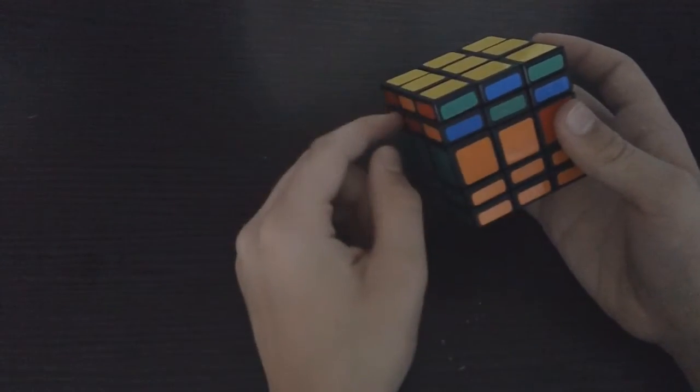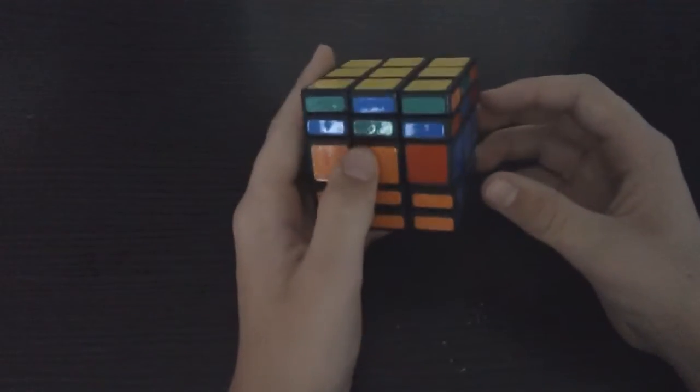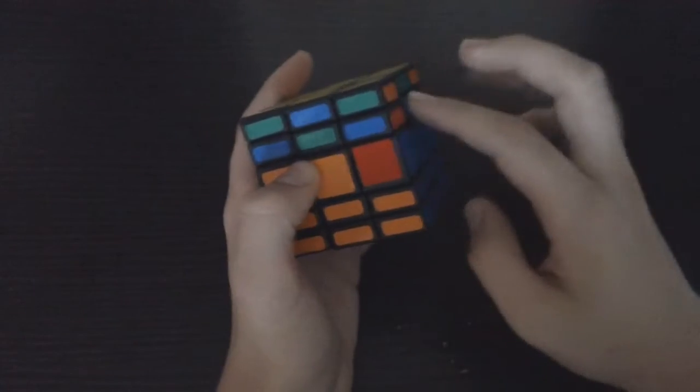So there's two algorithms, one is going across, and one is just going side to side. We're going to do the side to side one. Now side to side one is just switching adjacent middle pieces.